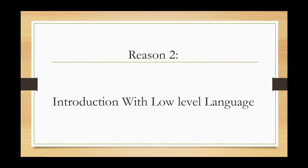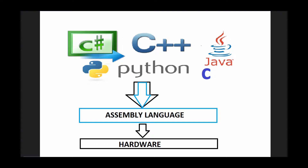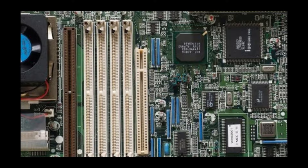The second important reason is an introduction to low-level languages. Any high-level languages that we use have to be converted into low-level languages and further into binary codes to work with the machine hardware. Hence, assembly language works as an intermediary between higher-level languages and the hardware. You will also have a better idea of how hardware actually works with software.